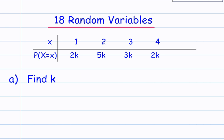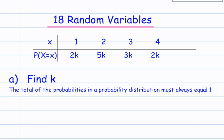So part A, find K. I said earlier that the total of the probabilities in the probability distribution must always be equal to 1. So all of these numbers here must be equal to 1. So 2K add 5K add 3K add 2K equals 1.